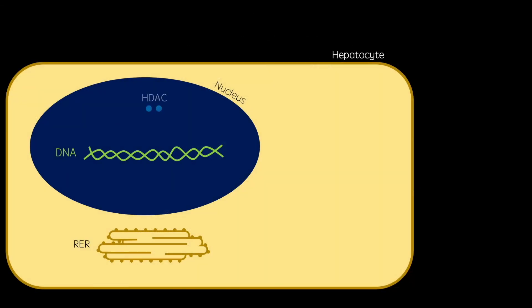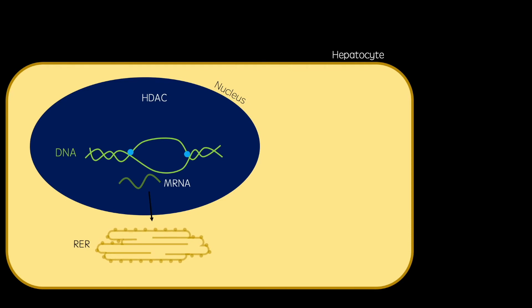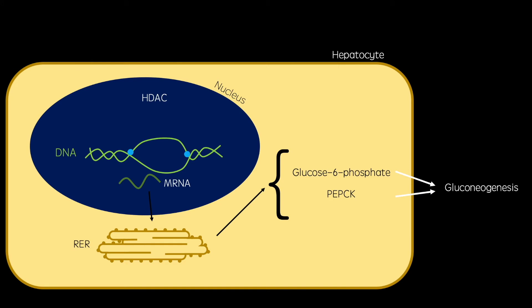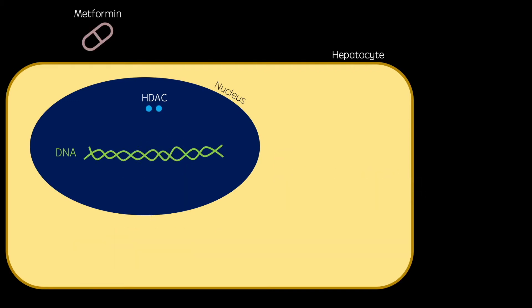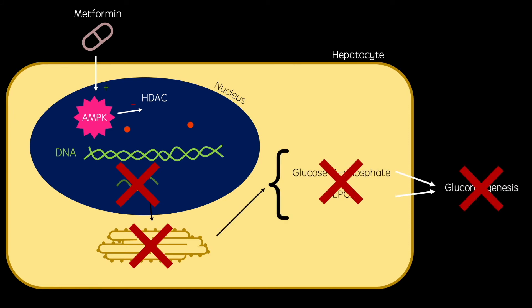In normal physiology, histone deacetylases bind to the histones upon which DNA is associated, allowing the DNA to unwind so that a gene can be transcribed and translated. This includes genes for glucose-6-phosphatase and PEPCK, which are vital enzymes in gluconeogenesis — a process which increases blood glucose concentration, the opposite of what you want if you are a type 2 diabetic. However, metformin activates 5' adenosine monophosphate-activated protein kinase, or AMPK. This enzyme inhibits the specific histone deacetylases which regulate these gluconeogenic genes, meaning these genes won't be transcribed or translated, and gluconeogenesis will be inhibited, therefore reducing blood glucose concentrations.